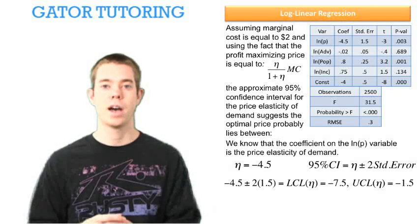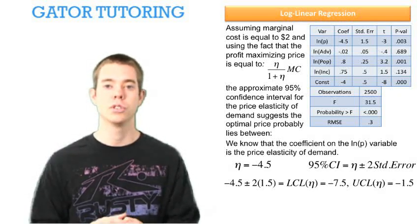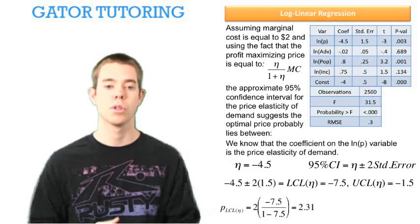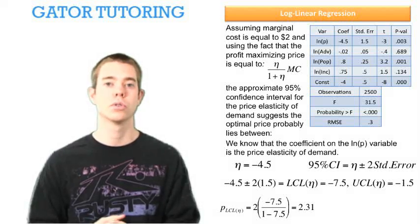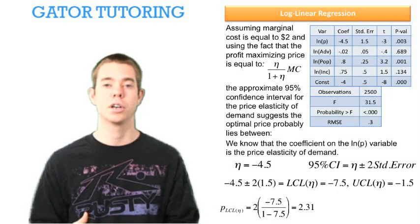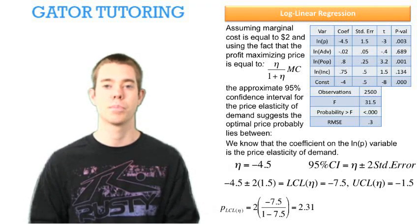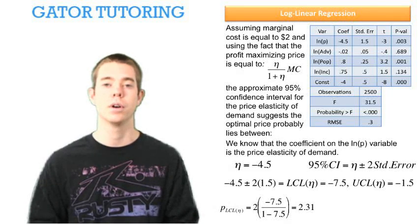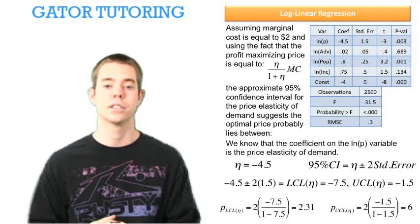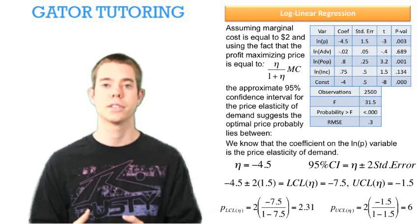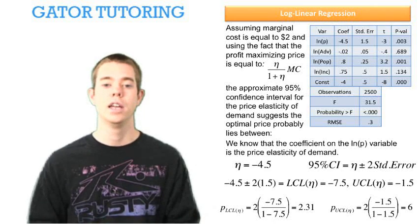So we're going to find a profit maximizing price at each of those elasticities. The profit maximizing price at the lower control limit elasticity is $2 of marginal cost times negative 7.5 over one plus negative 7.5, and we find the price is equal to $2.31. The profit maximizing price at the upper control limit elasticity is the same marginal cost but using the elasticity of negative 1.5, and we find that the price is $6.